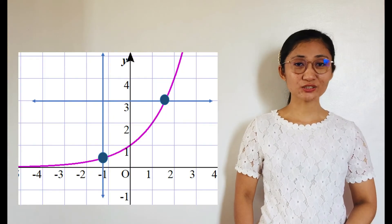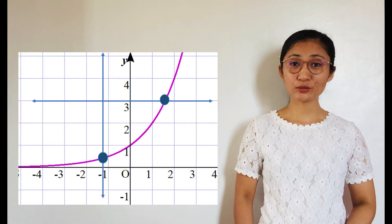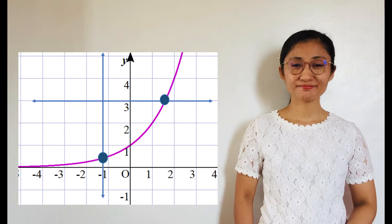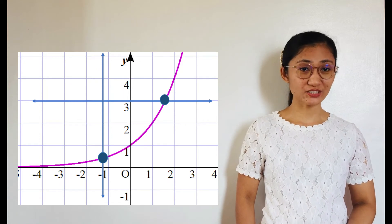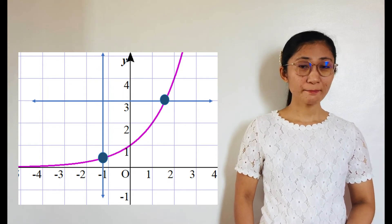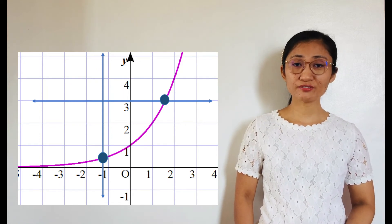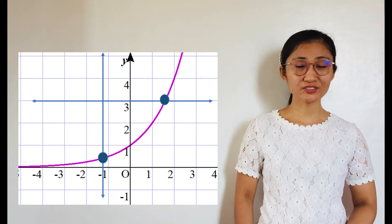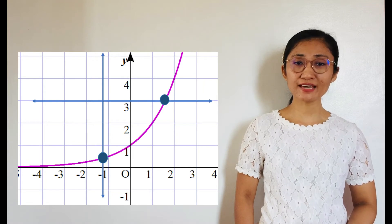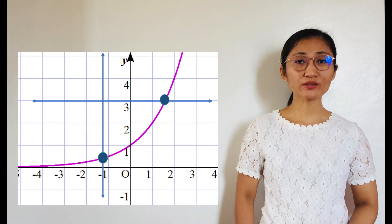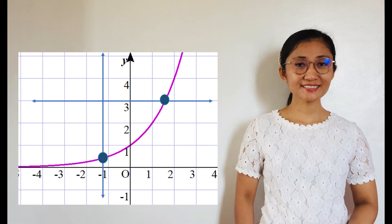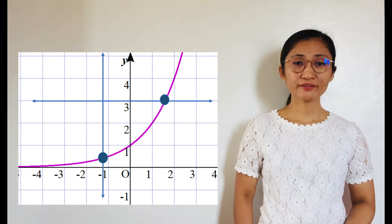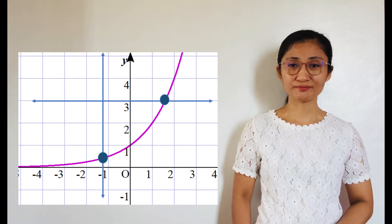You've seen many graphs of exponential functions in previous video lessons. We've emphasized that the graph of an exponential function passes both the vertical and horizontal line tests, which denotes that it is a one-to-one function. And since it is so, then it has an inverse function.